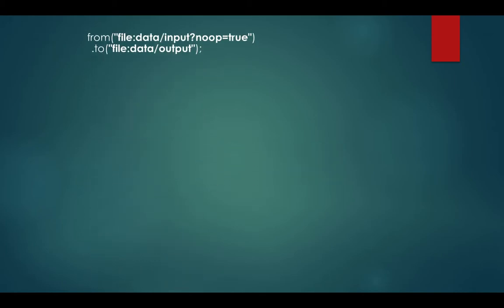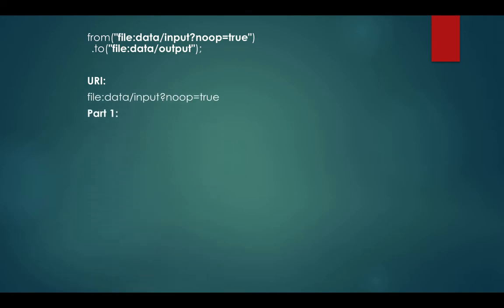In Camel, the route starts from a 'from' method and ends with a 'to' method. The code that is present inside the parentheses is called the URI. In general, a URI has three parts. Let's talk about the first part, which is 'file'. The file is nothing but a component in the Camel world if you are connecting to a different source.